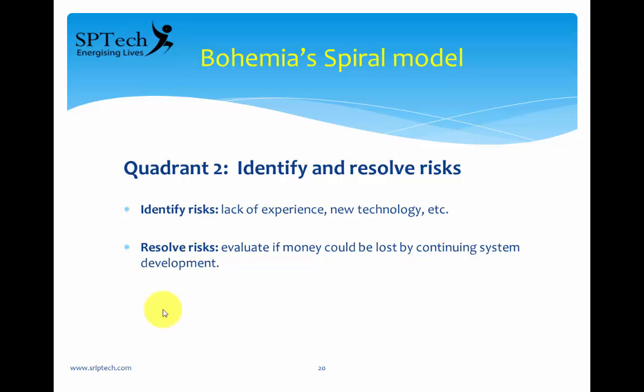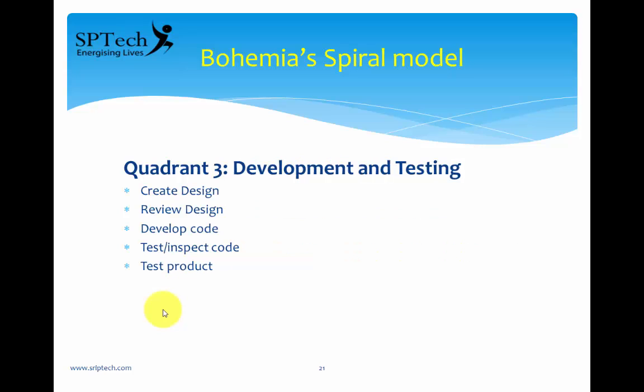In quadrant two, you identify and resolve risk. You identify what risks are involved — for example, lack of experience. If you have a team that has only worked on banking projects and a customer asks you to develop an e-commerce portal, they have no experience in that area. That is a risk. Because of this risk, if you proceed with the project you could lose money or time. So you need to identify and resolve risks in quadrant two.